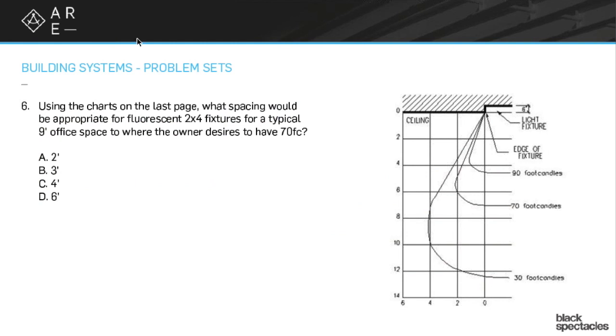First question is, we have a nine foot ceiling. We have the 2x4, we have this chart, it's asked for 70 foot candles. Where do we want the 70 foot candles? Think about that for a second.